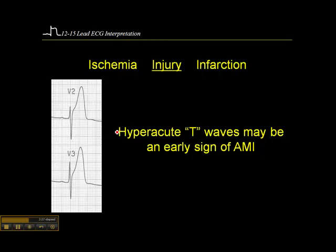The other thing you might see in a hyperacute MI — occurring within the first 5 to 15 minutes — is something called hyperacute T waves. These are very tall, rounded T waves, as opposed to the tall peaked T waves that we see in hyperkalemia or high serum potassium. These are tall and rounded, and they present in a patient who has signs and symptoms consistent with acute MI or cardiac ischemia. You'd have to see them in two anatomically contiguous leads.